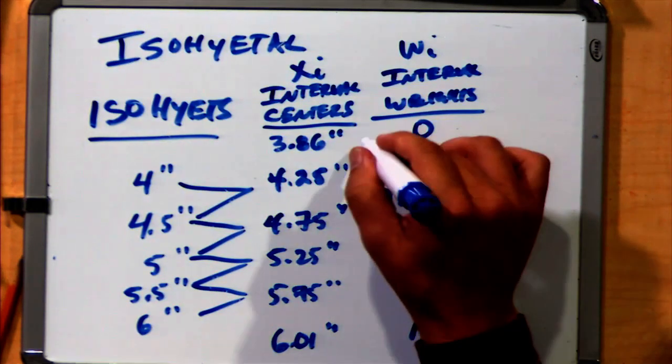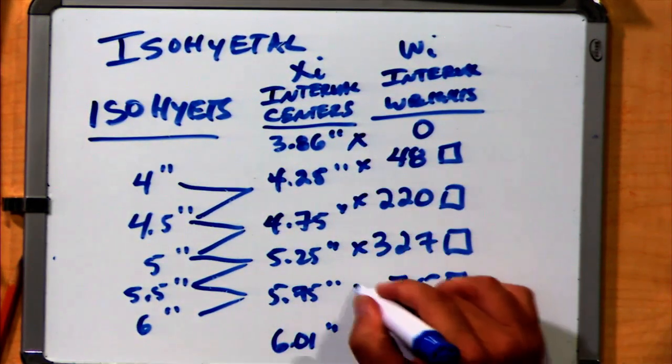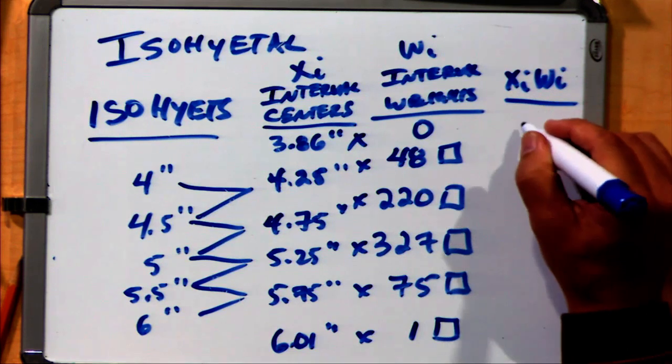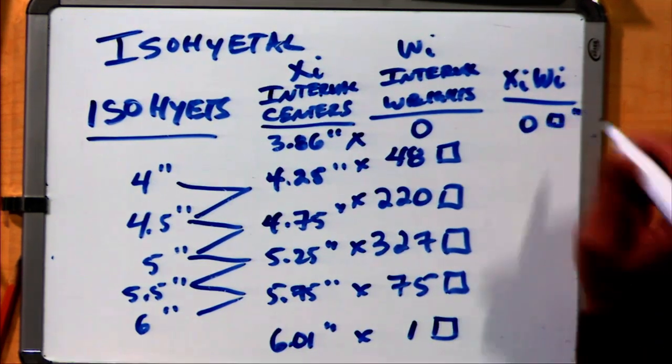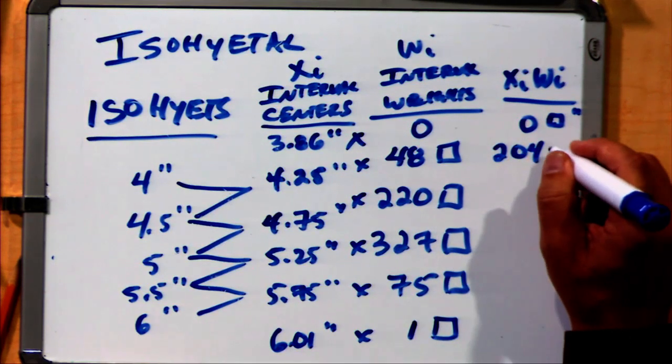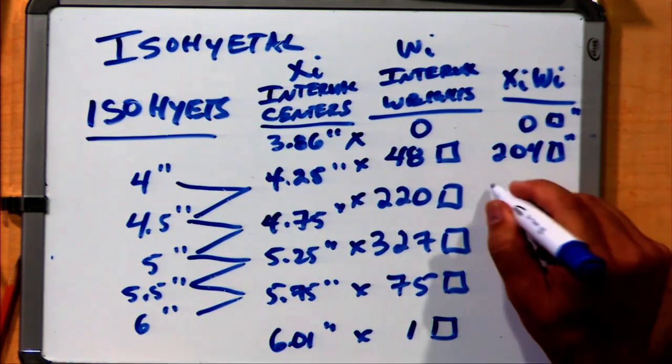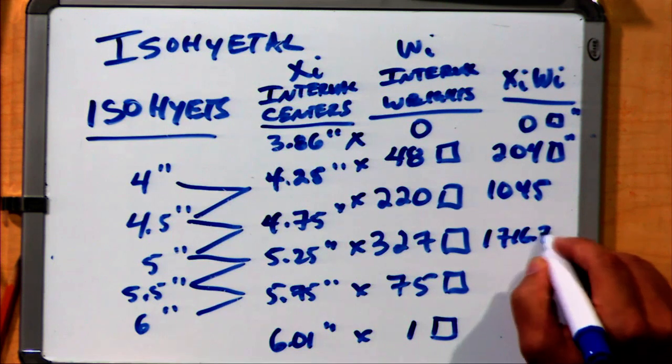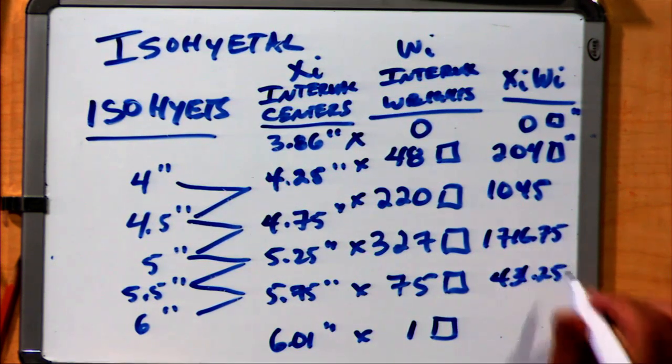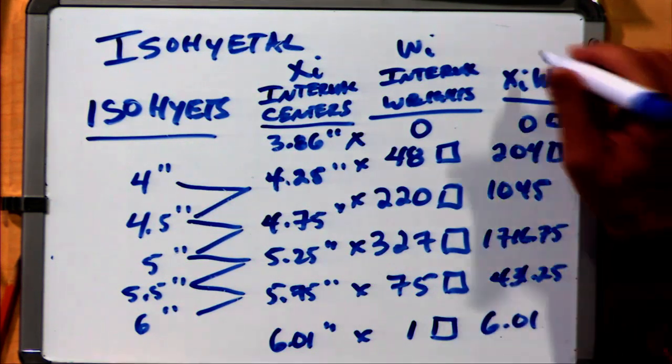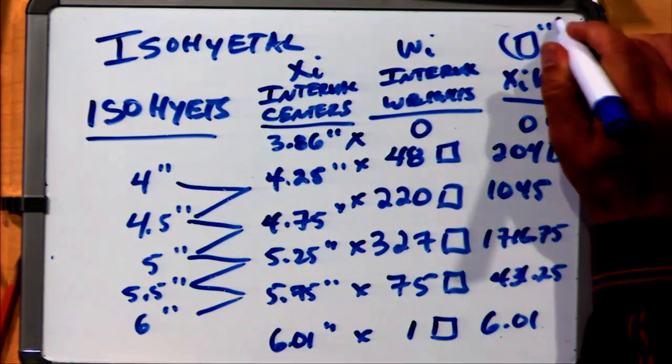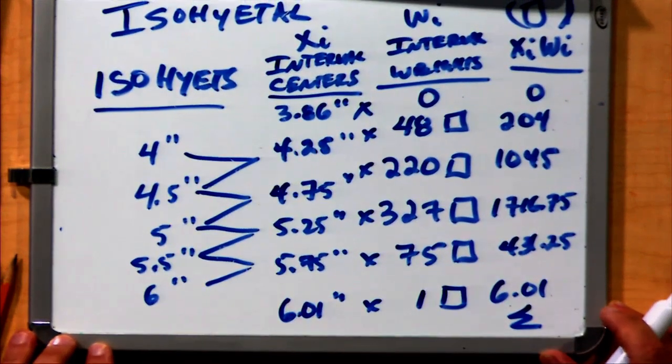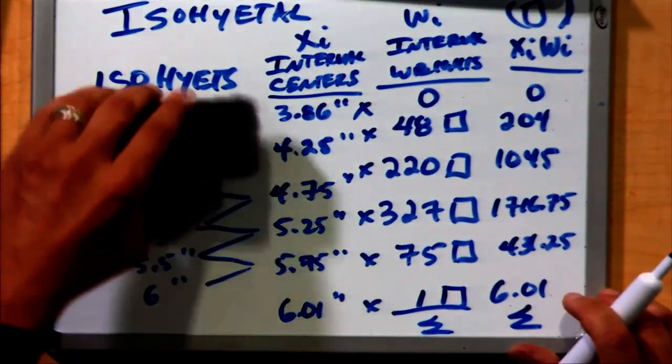As in all other calculations, we take our values and multiply them by the appropriate weights, xi times wi. The first one has a value of zero box inches. The others are found by similar multiplication: 204, 1045, 1716, 431.25, and finally 6.01. All these are measured in box inches. Now that I have all these products, we sum them up. Similarly, we also want the sum of the weights.